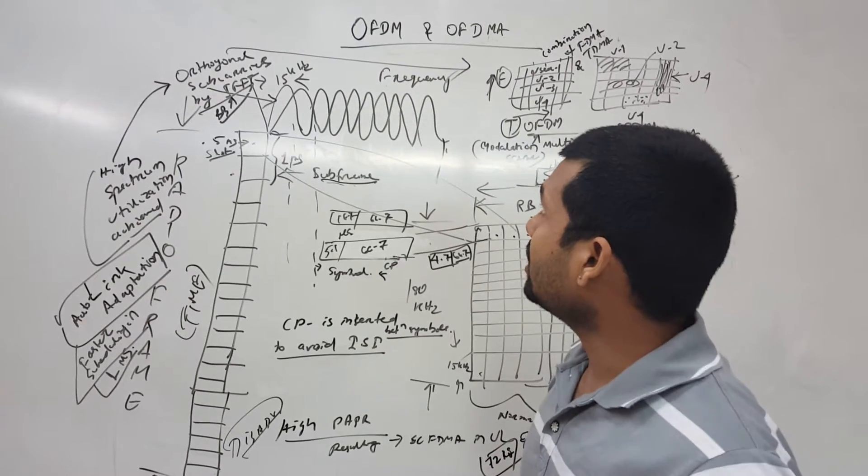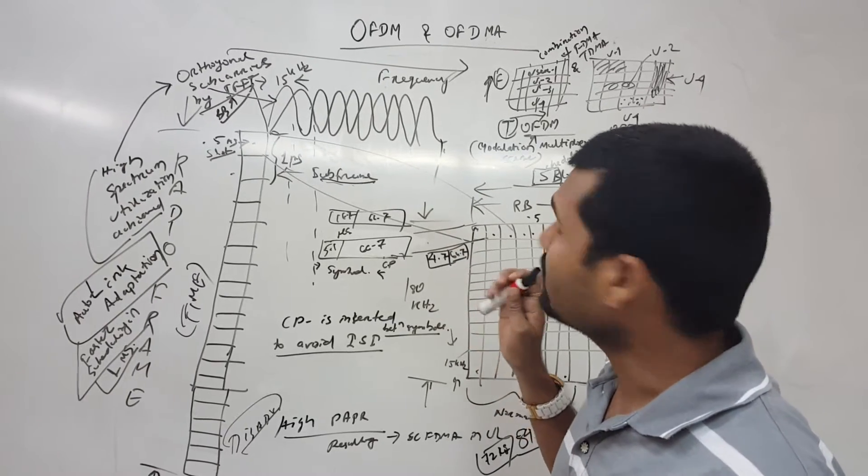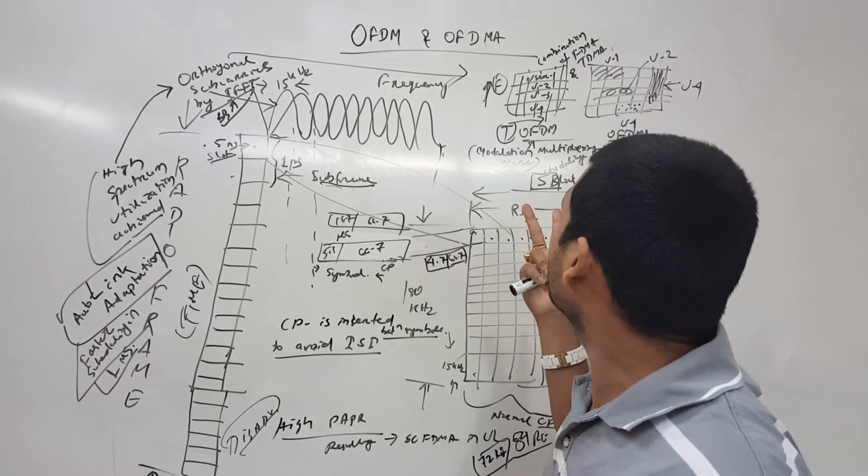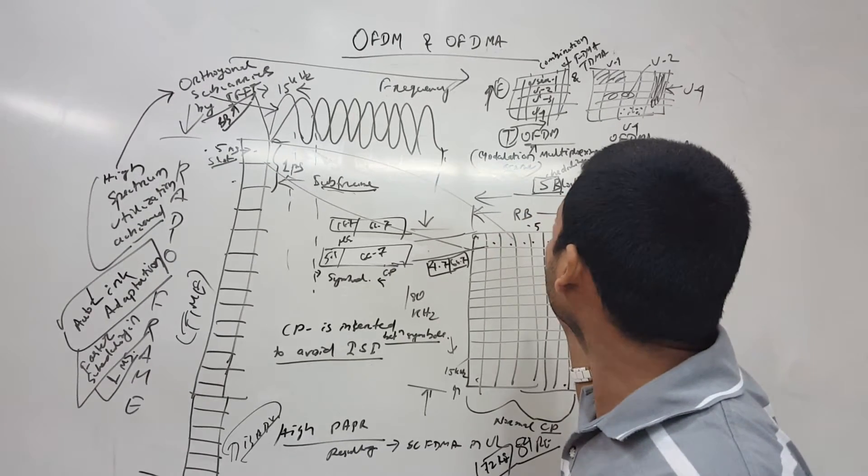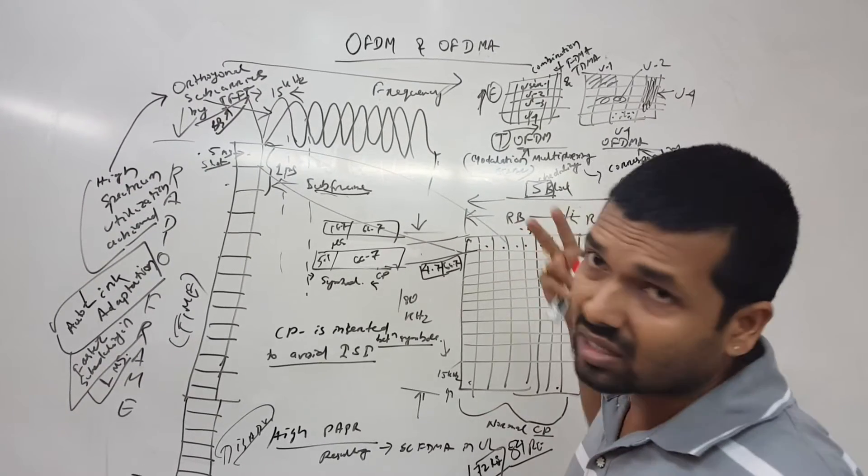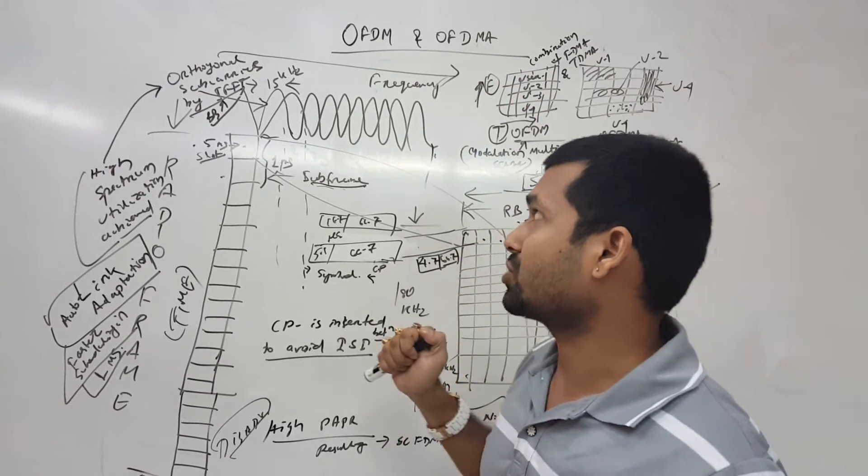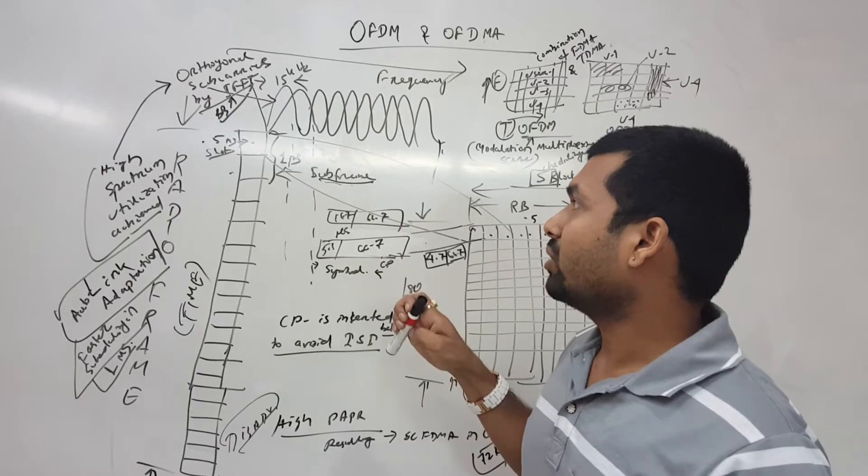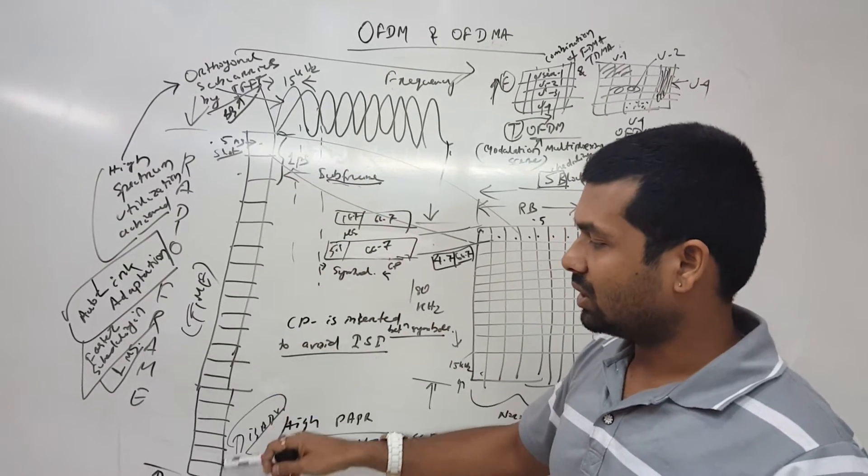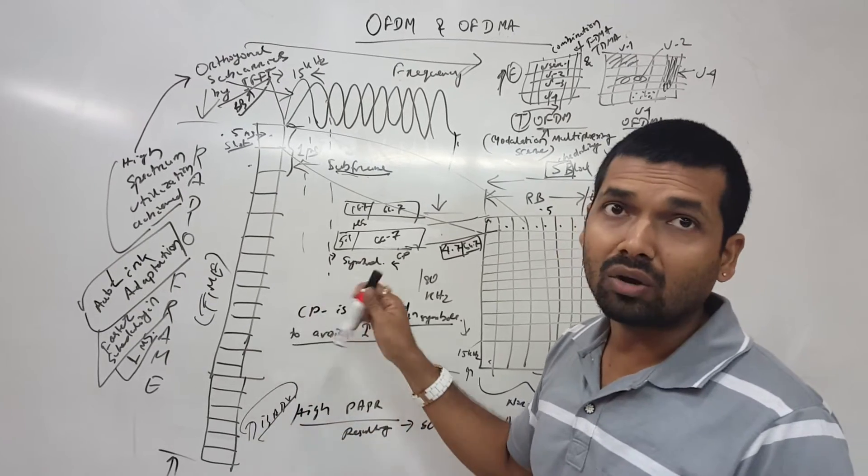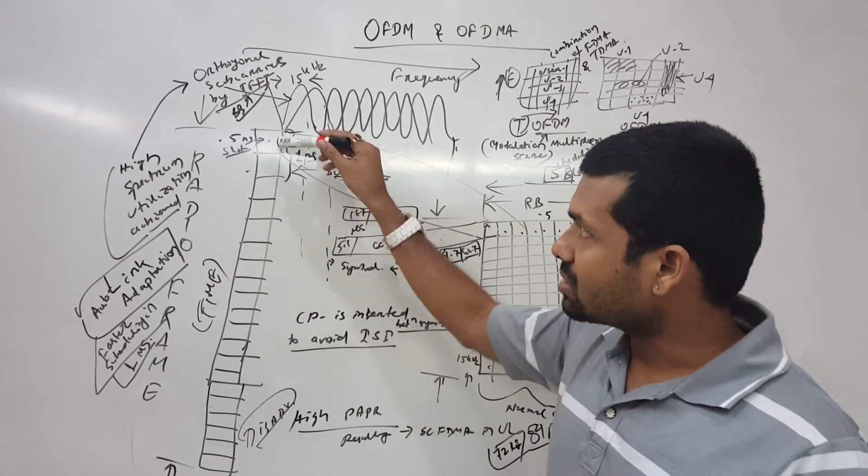OFDM is a modulation multiplexing scheme, and OFDMA is a result of that - it is a corresponding multi-access technology which is used in the downlink of LTE transmission. A radio frame is normally 10 milliseconds long.